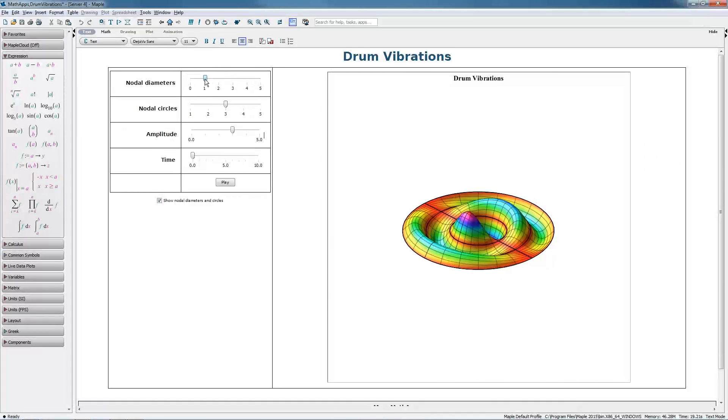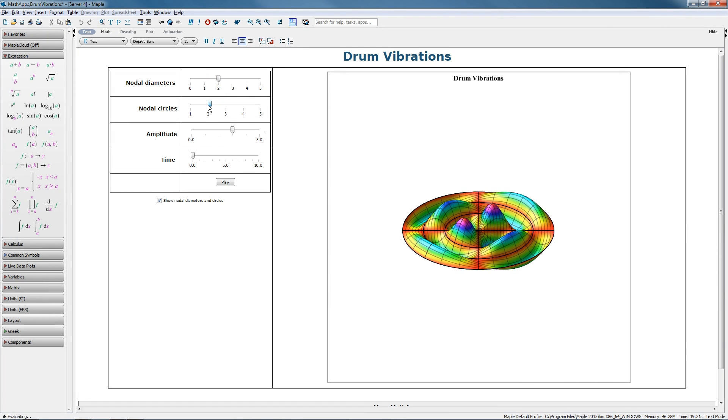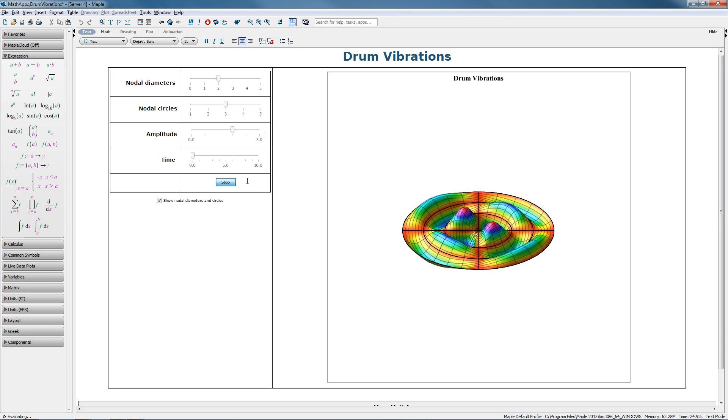In the following math app, students can interact with sliders that correspond to various factors, like amplitude, nodal diameter, nodal circles, in order to see the effect of striking the surface of a drum. This can then be played back as an animation in order to explore the resulting surface.